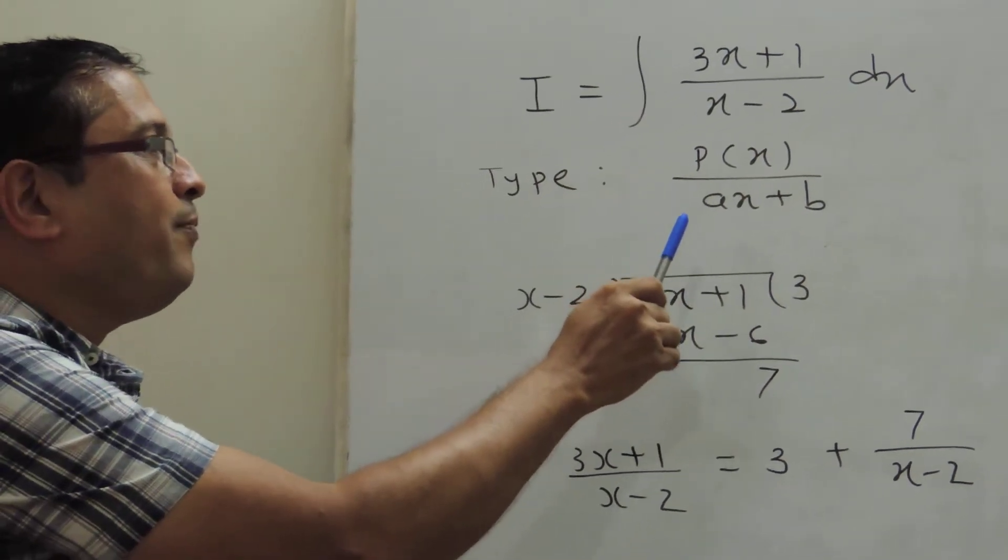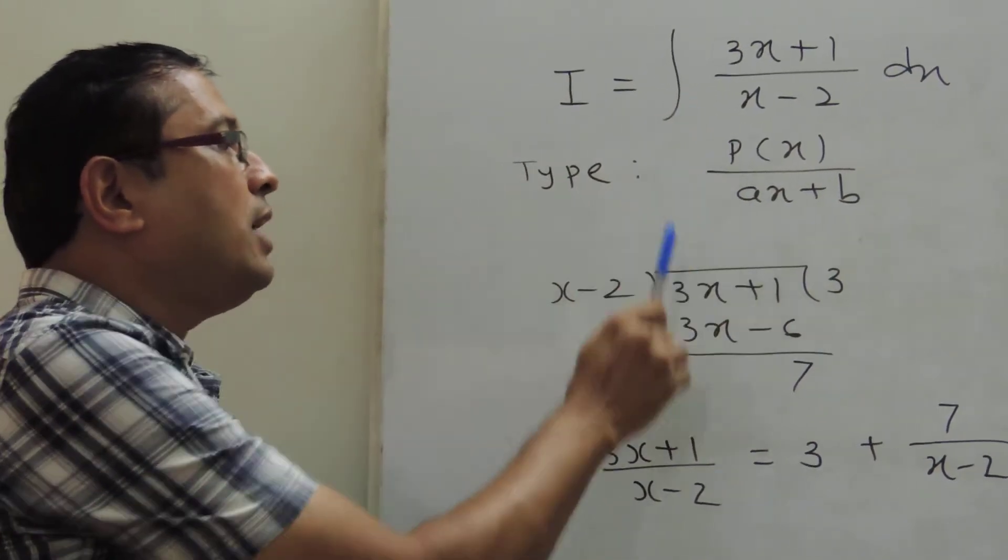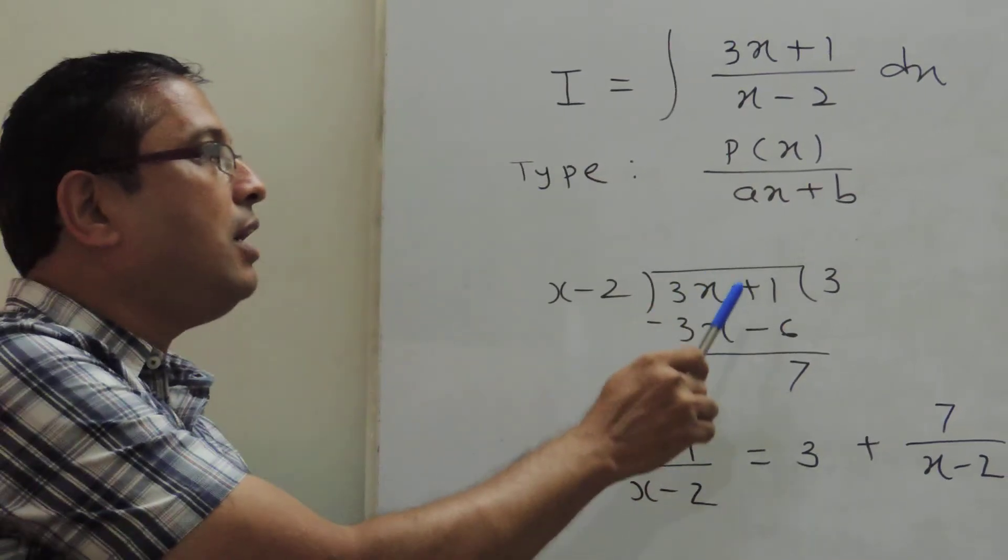Now in this case, what do we do? We divide numerator by denominator. Let me explain the division.